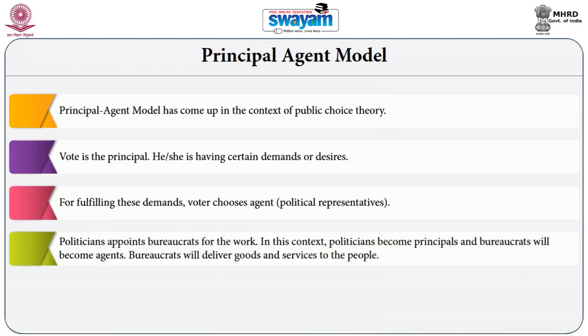Subsequently, the politician or elected public representative, as a master, appoints or recruits certain agencies or executives — which may be in the form of bureaucrats, non-governmental organizations, or outsourced private agencies — in order to implement the policy decisions taken by the master, the politician.